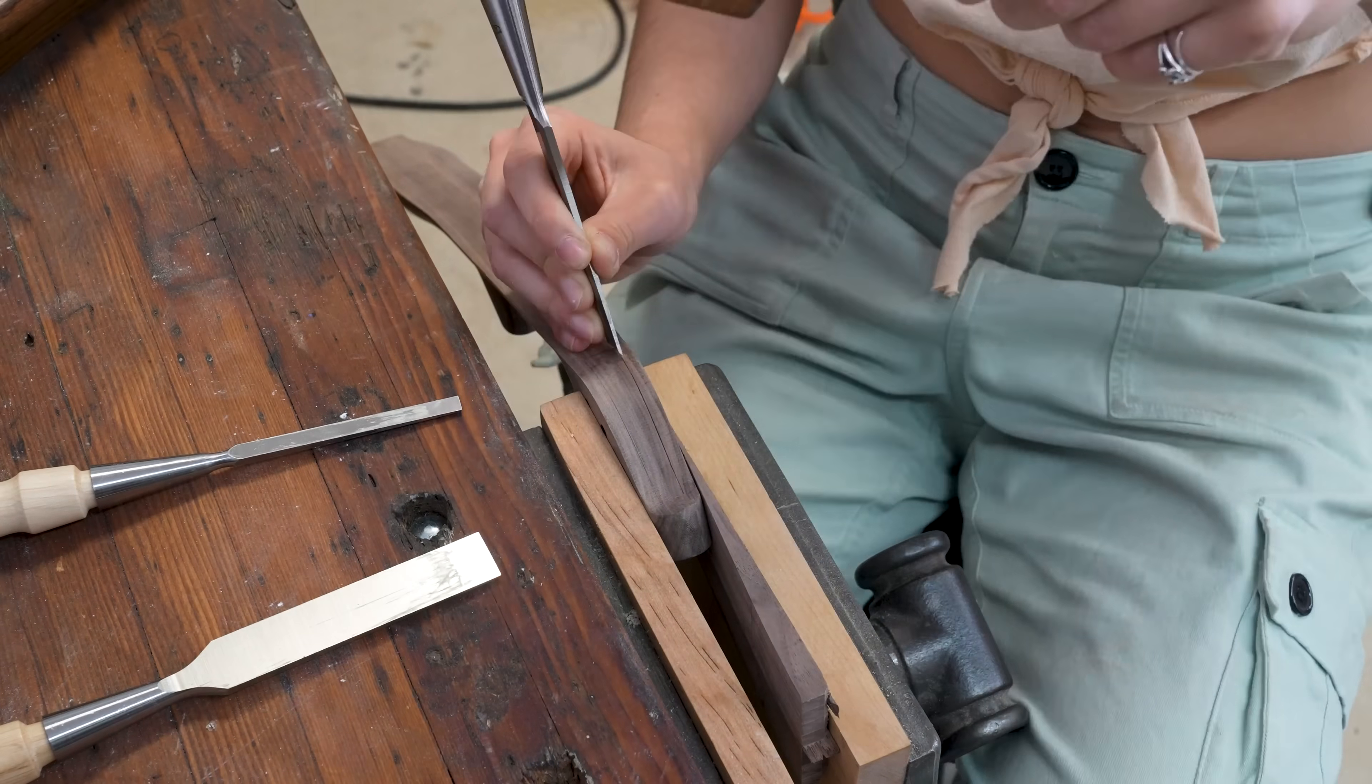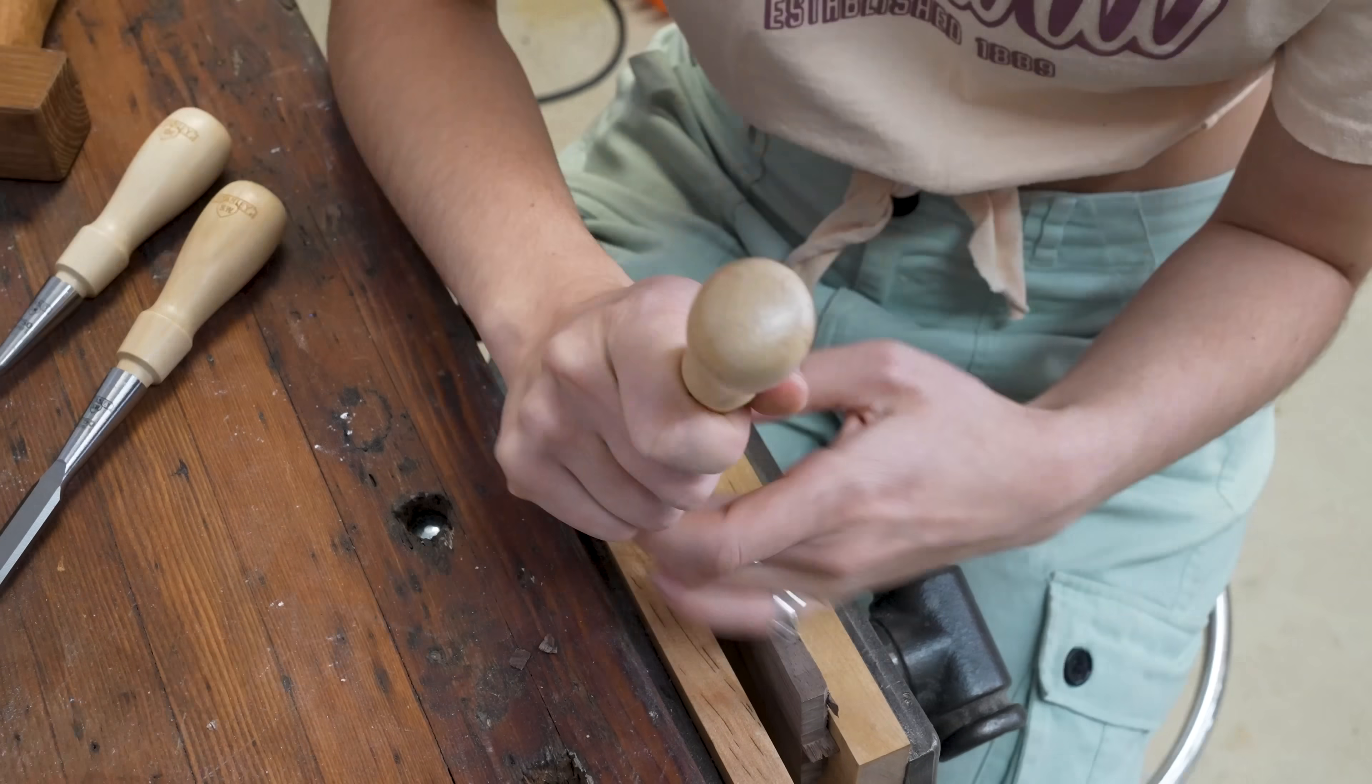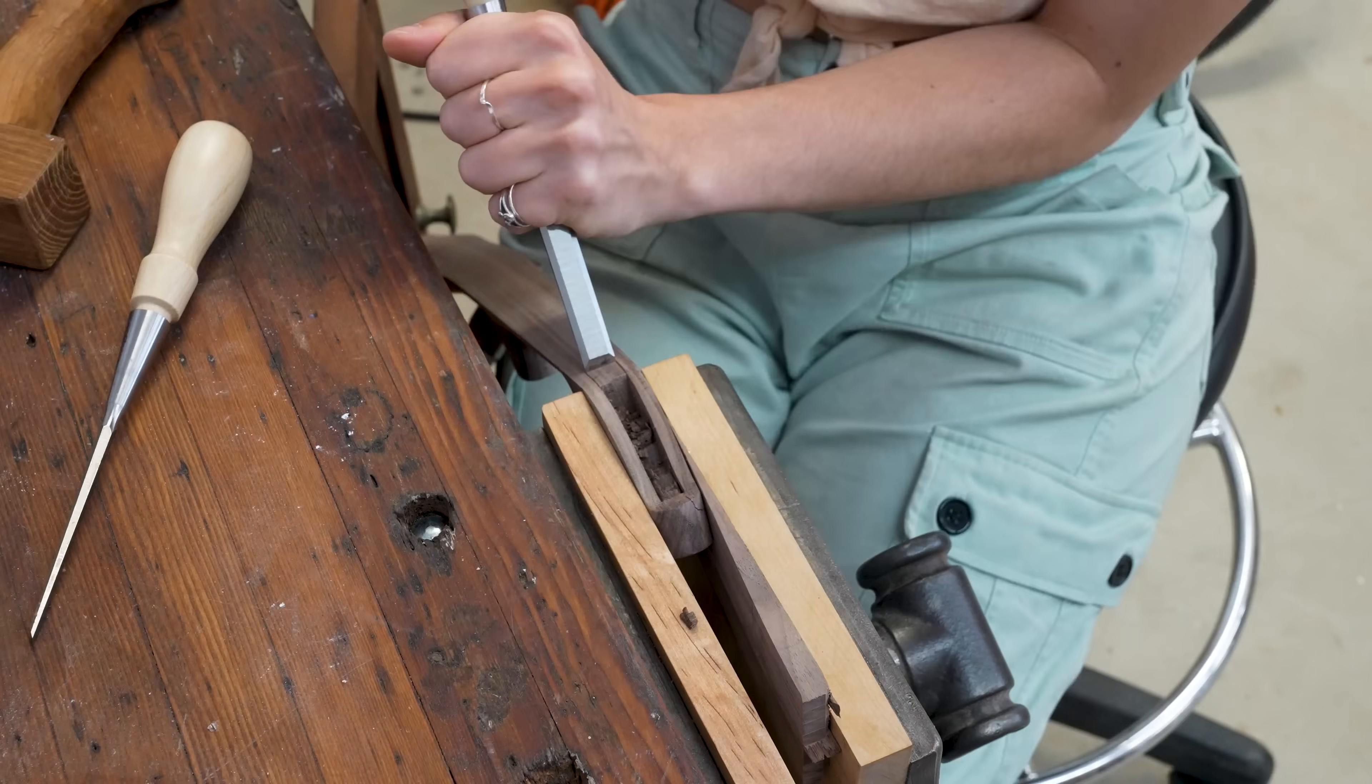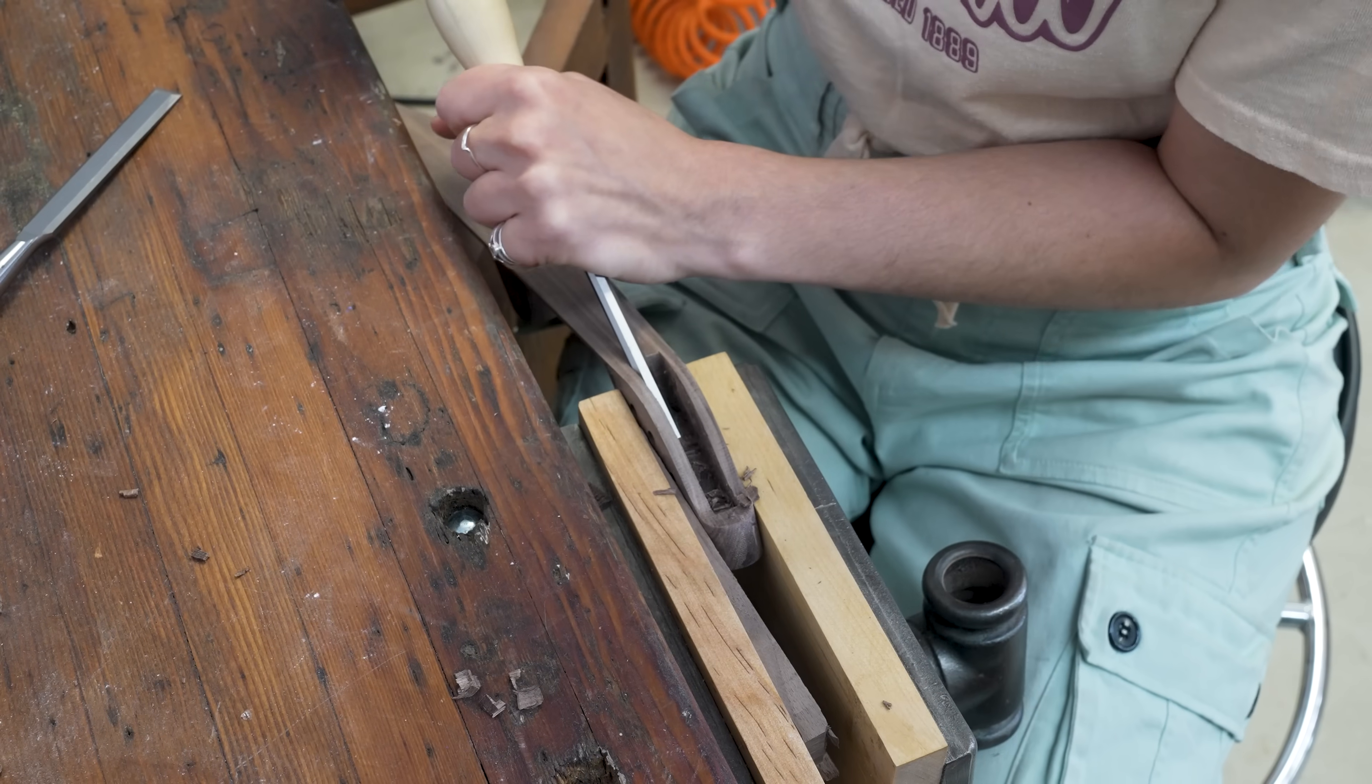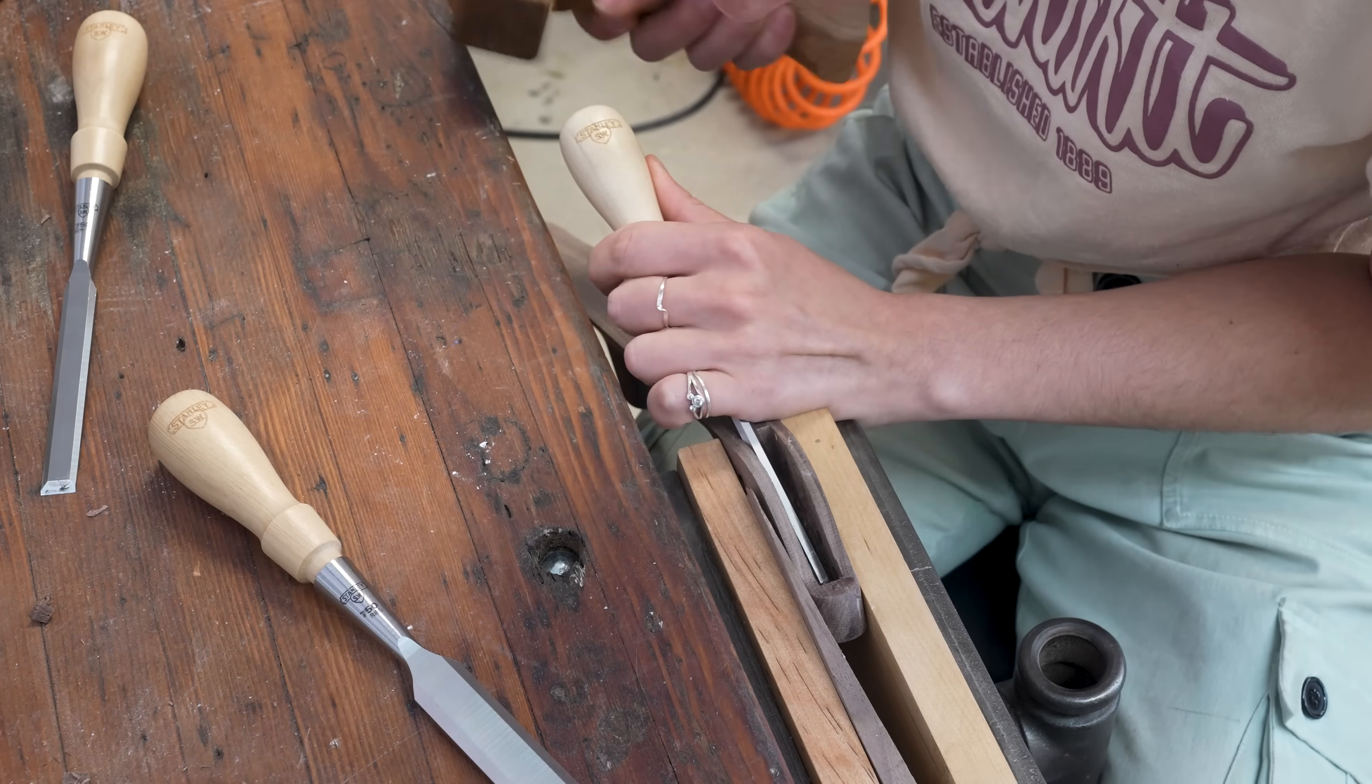Then it was time to carve out the peg box. Now, this was in an axis that the CNC couldn't get to without a third operation, which I decided wasn't worth it. And plus, I needed to get some hand tool time in on this build. So this ended up being probably my favorite afternoon working on this violin, just listening to Hilary Hahn play Bach and chiseling away.